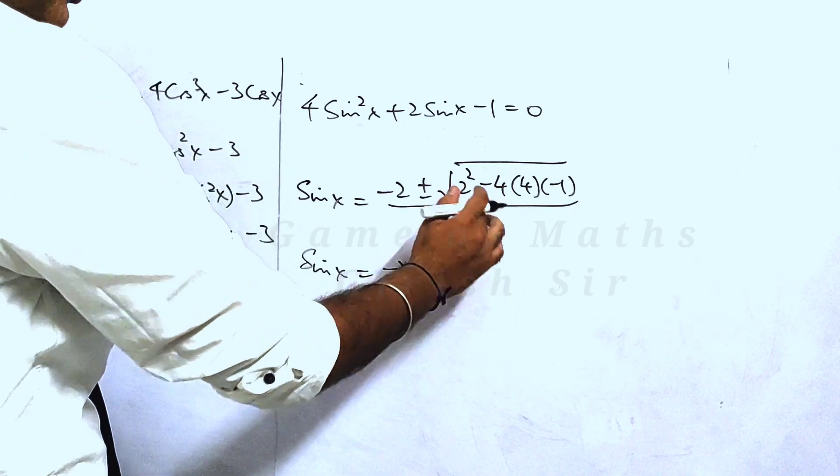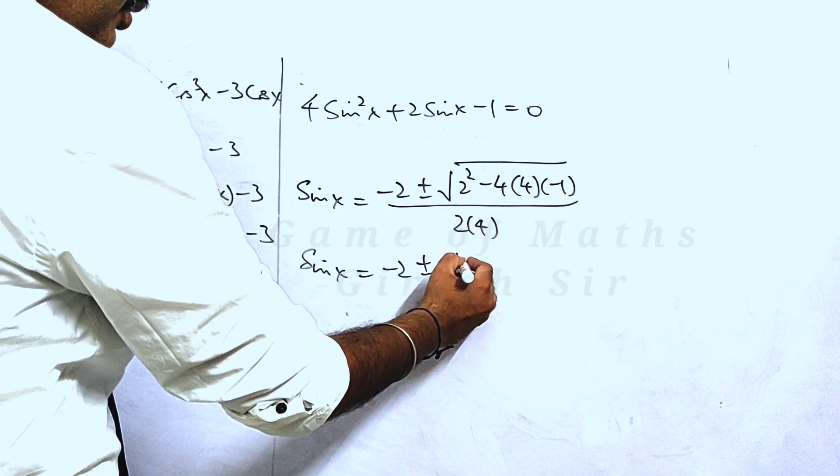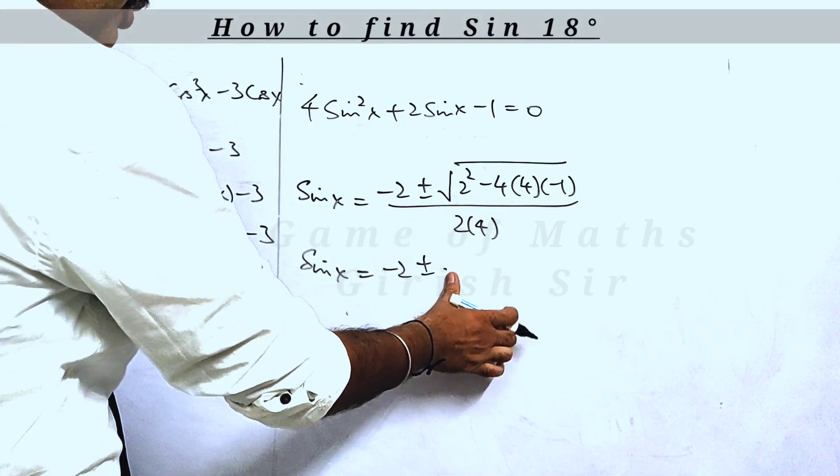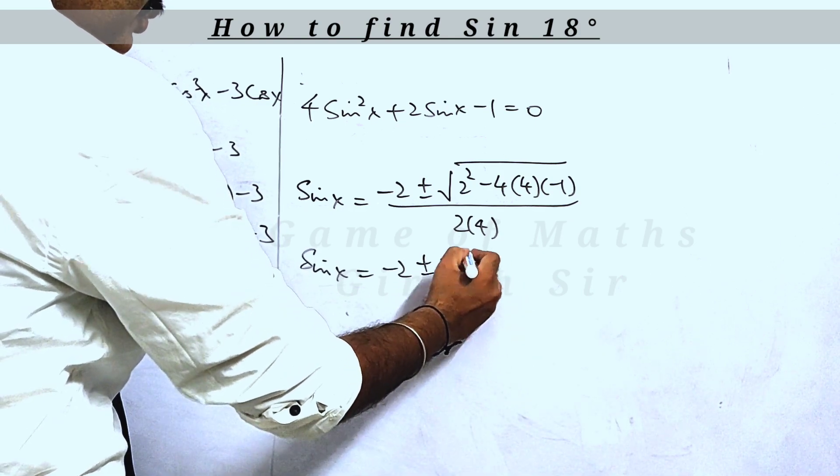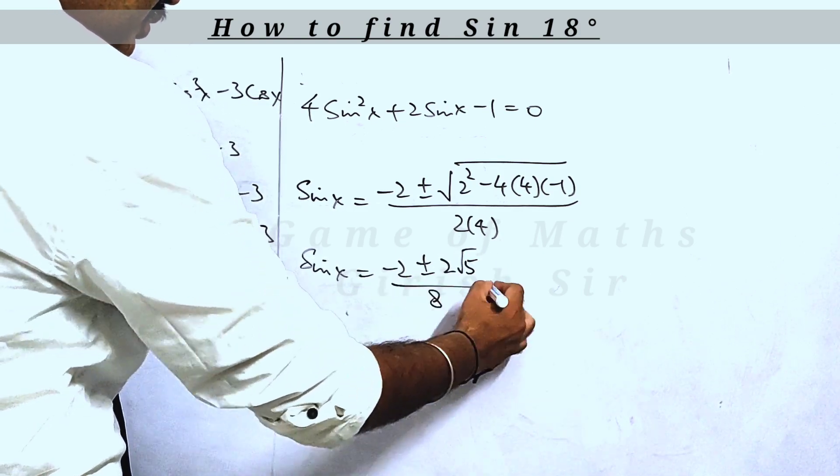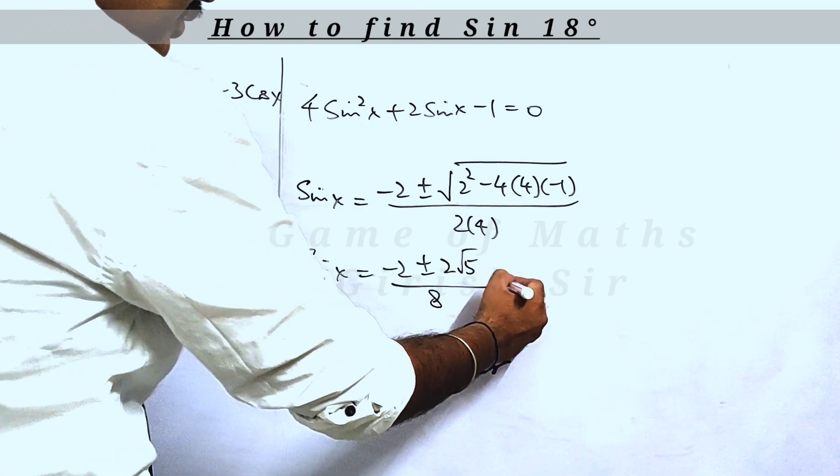This would be 16 plus 4, which is 20. 20 inside the square root would be written as 2 root 5. Divide it by 4. Now if you see, 2 is a common factor we can cancel out.